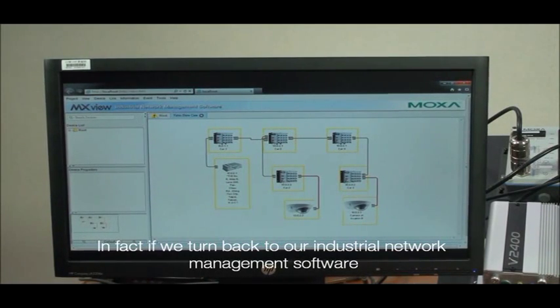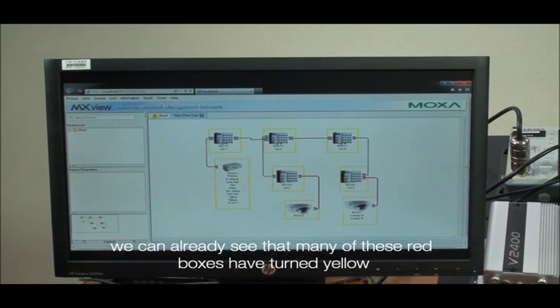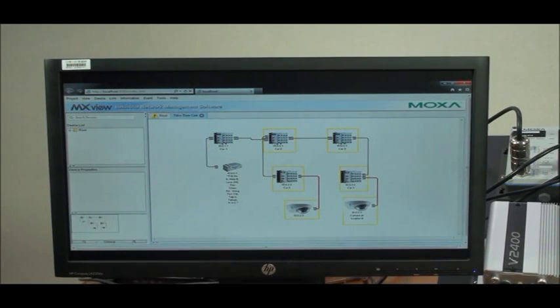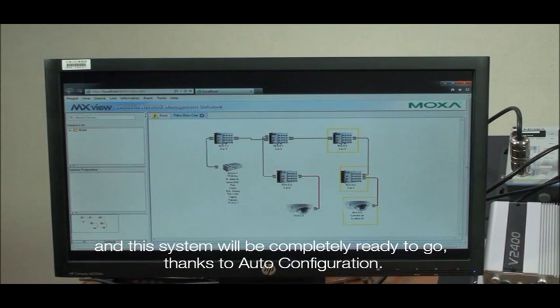In fact, if we turn back to our industrial network management software, we can already see that many of these red boxes have turned yellow and very soon they'll disappear because the IP address conflict will have been resolved and this system will be completely ready to go, thanks to auto configuration.